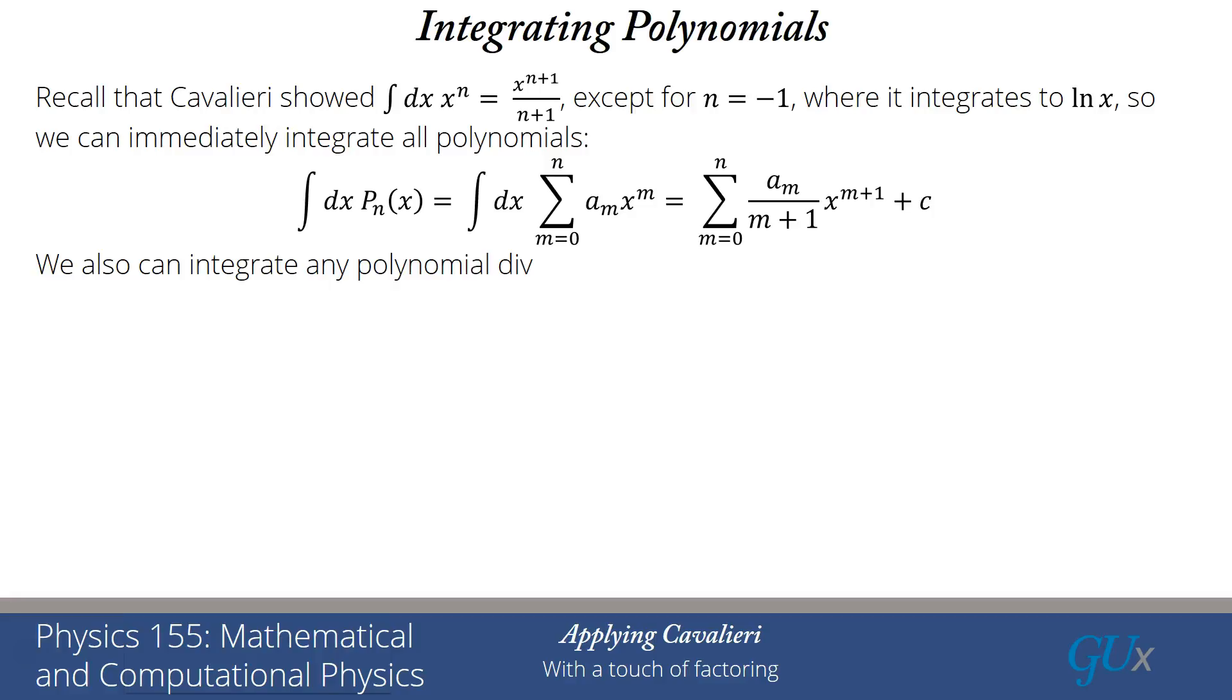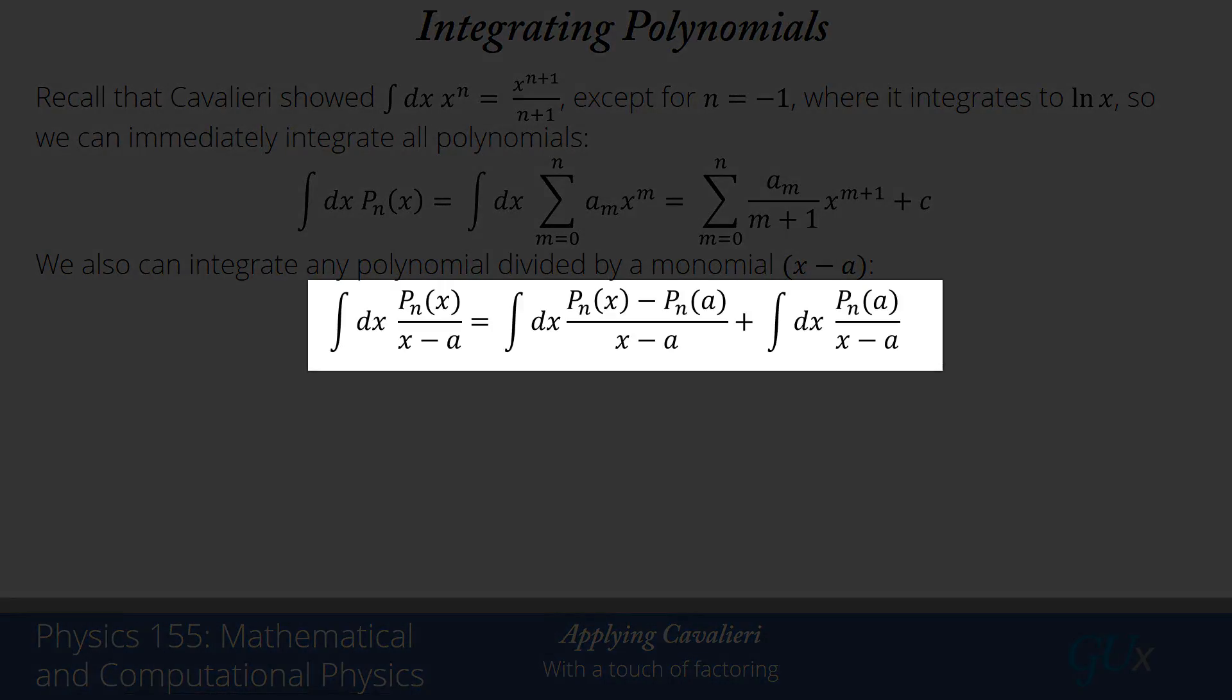We can similarly integrate any polynomial divided by a monomial. The monomial is going to just be x - a, so let's take a look at what that looks like. We're going to do the famous adding zero trick. We're going to add P_n(a) and subtract P_n(a). We're doing that so that the first term is going to vanish when x = a, and so that means it has a power of (x - a) that can be factored out of it. So that first term does not have any singularity. I've removed the singularity by subtracting P_n(a).